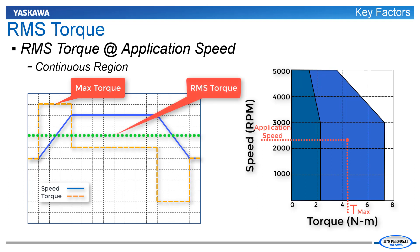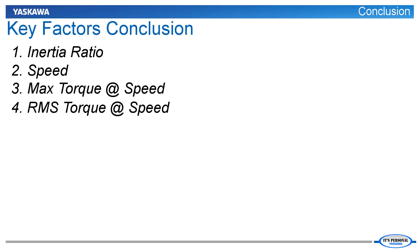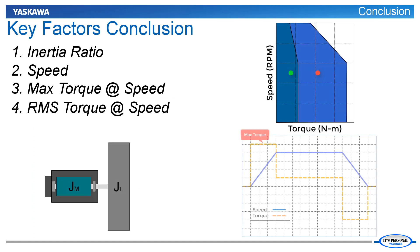Another torque calculation is critical for sizing: the RMS torque. RMS torque is a time-weighted average of the torque during a complete machine cycle and represents an equivalent steady-state torque level. For example, a servomotor with 1.2 Nm RMS torque will experience the same heat rise if it produces 1.2 Nm constant torque. So it is also important to ensure that the RMS torque at application speed falls within the continuous region of the speed-torque curve. Provided that the inertia ratio, speed, max torque, and RMS torque all fit the motor as described, then the motor is properly sized.